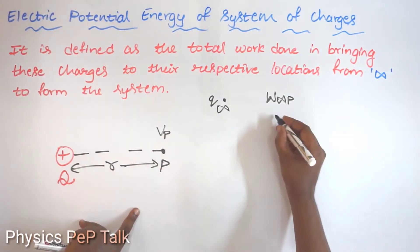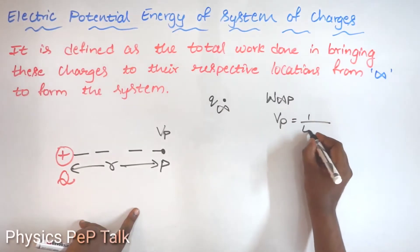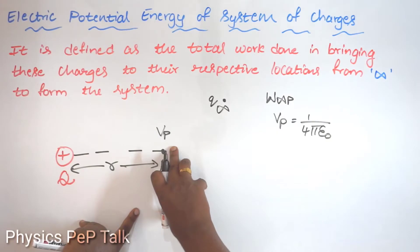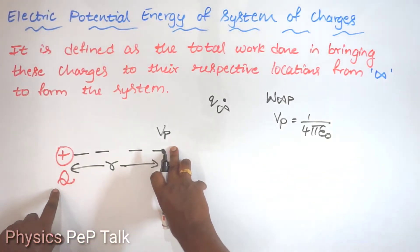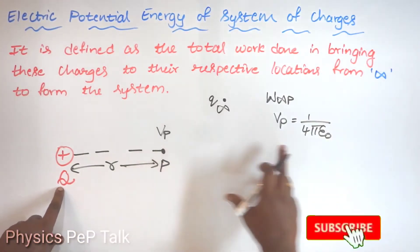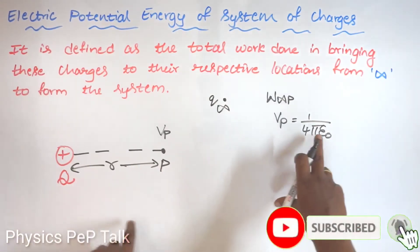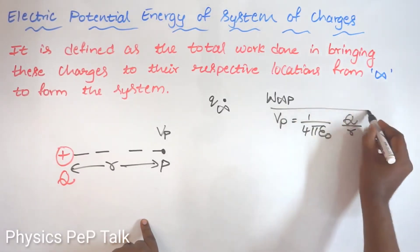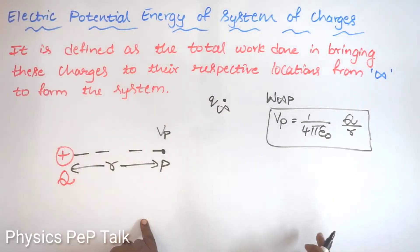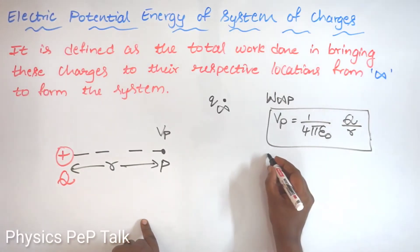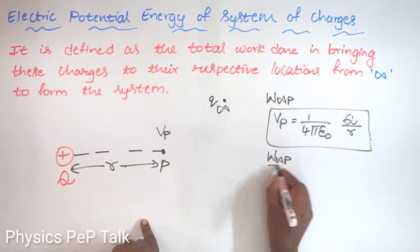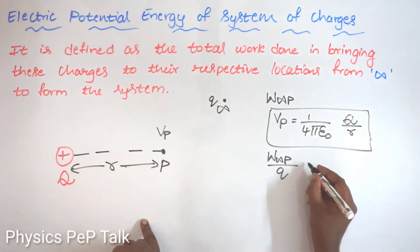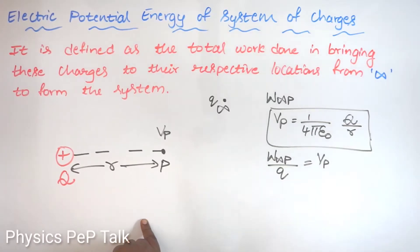Electric potential at point P is defined as 1 by 4 pi epsilon naught. So the electric potential Vp is equal to 1 by 4 pi epsilon naught × Q by R. The basic definition of electric potential is the work done in bringing a charge from infinity to point P, divided by the charge that I am bringing. So small q is nothing but Vp.